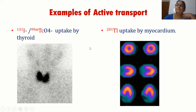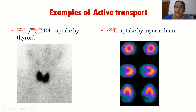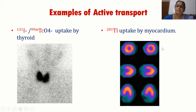Examples of active transport are iodine-131 and 99m pertechnetate uptake by the thyroid, and thallium-201 uptake by the myocardium.